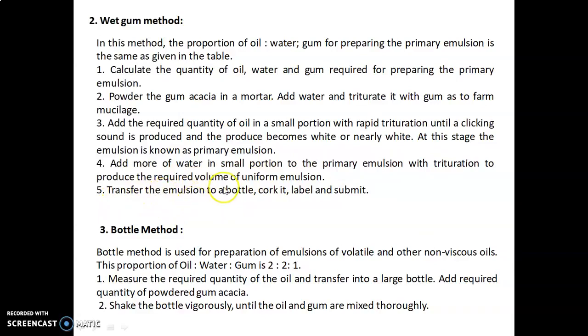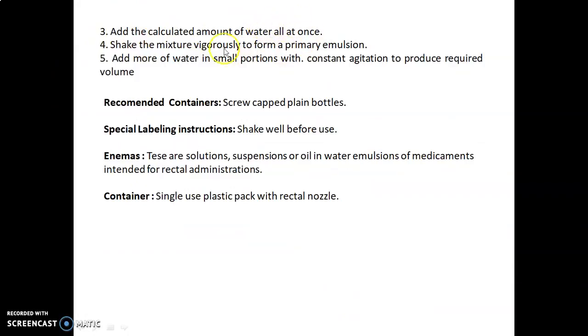Bottle method is used for preparation of emulsions of volatile and other non-viscous oils. The proportion of oil to water to gum is 2:2:1. Measure required quantity of oil and transfer into a large bottle. Add required quantity of powdered gum acacia. Shake the bottle vigorously until oil and gum are mixed thoroughly. Add the calculated amount of water all at once. Shake the mixture vigorously to form primary emulsion. Add more water in small portions with constant agitation to produce the required volume.